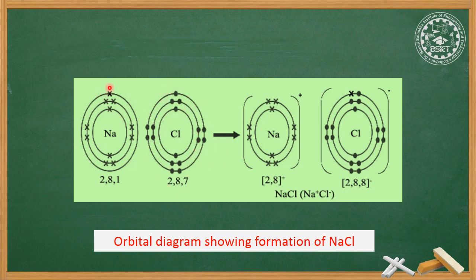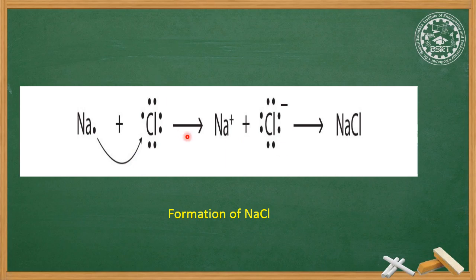There is a complete transfer of one electron from sodium to chlorine. Sodium becomes positively charged and chlorine becomes negatively charged. These opposite charges result in electrostatic force of attraction — this is the ionic bond. As a result, the NaCl molecule is formed.